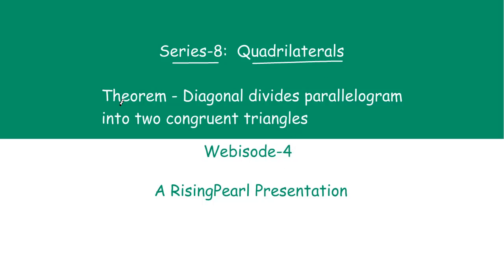Today we are going to take up a theorem and then find out how to prove that theorem is correct. Today's theorem is: a diagonal divides a parallelogram into two congruent triangles. So the diagonal of a parallelogram divides the parallelogram into two congruent triangles.